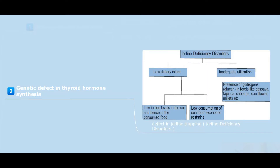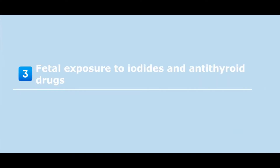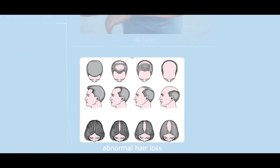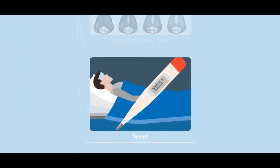Low dietary intake occurs due to low iodine levels in the soil and hence in the consumed food, or low consumption of seafood due to economic restraints. Inadequate utilization is due to the presence of goitrogens in foods like cassava, cauliflower, and millets. Fetal exposure to iodides and antithyroid drugs can also cause side effects including rash, itching, abnormal hair loss, and fever.